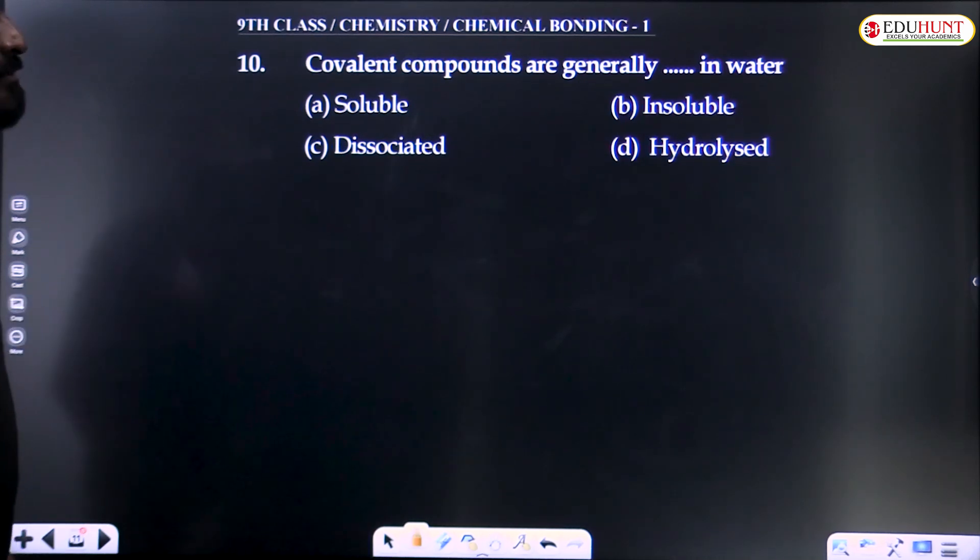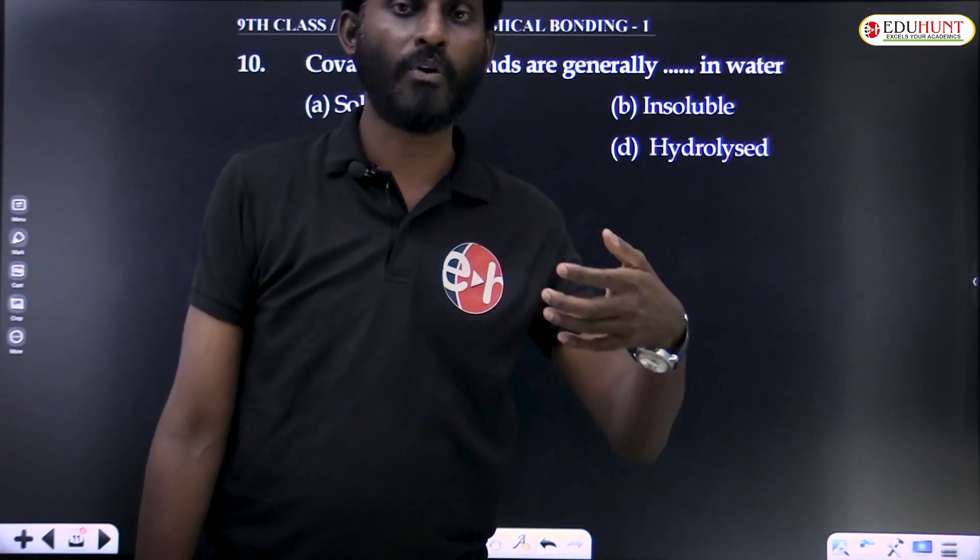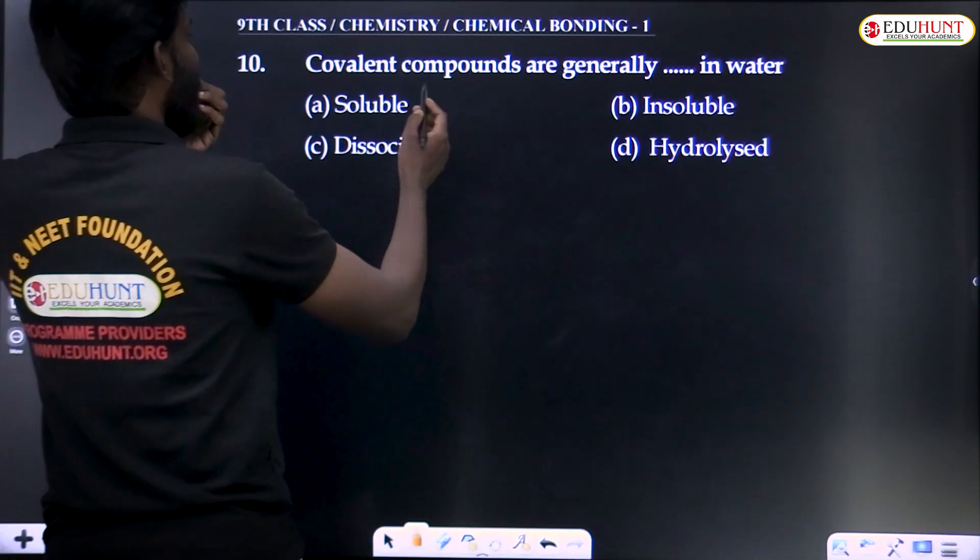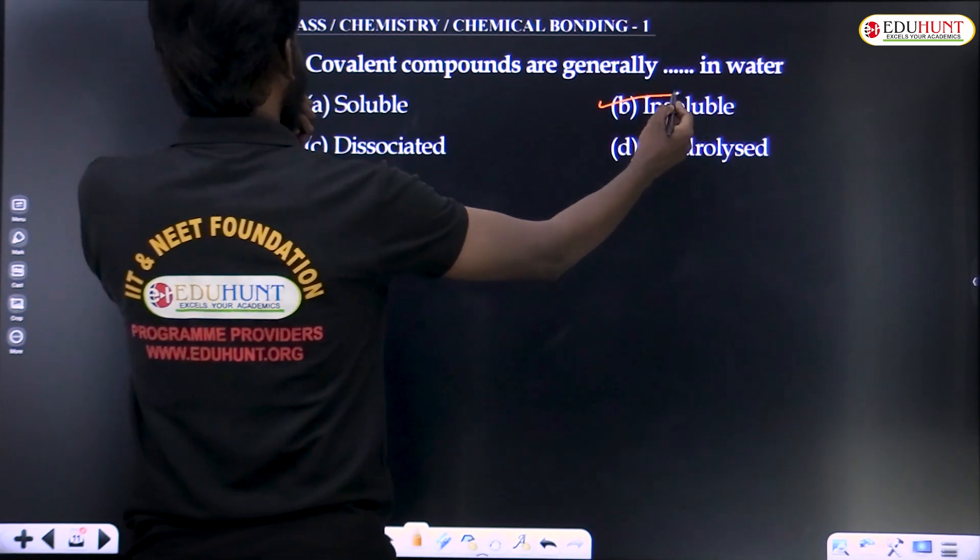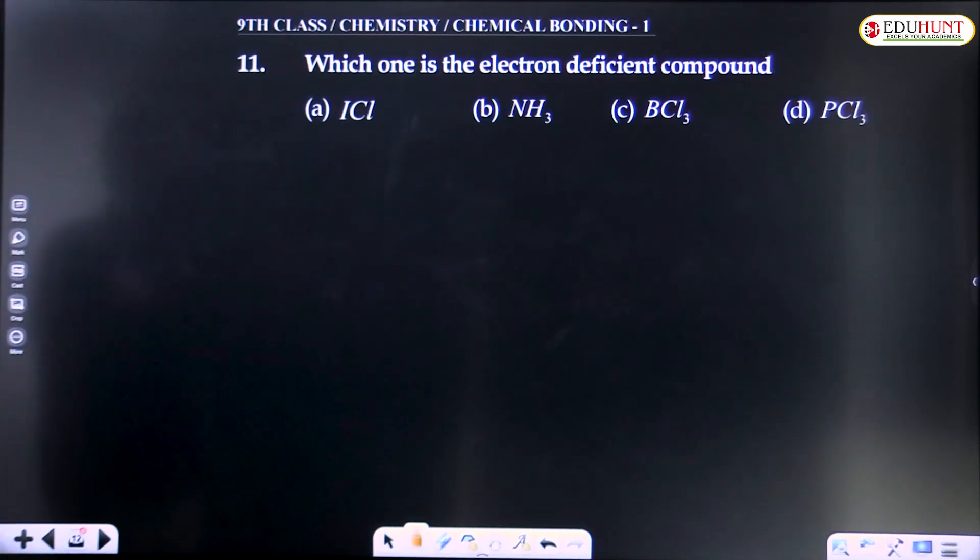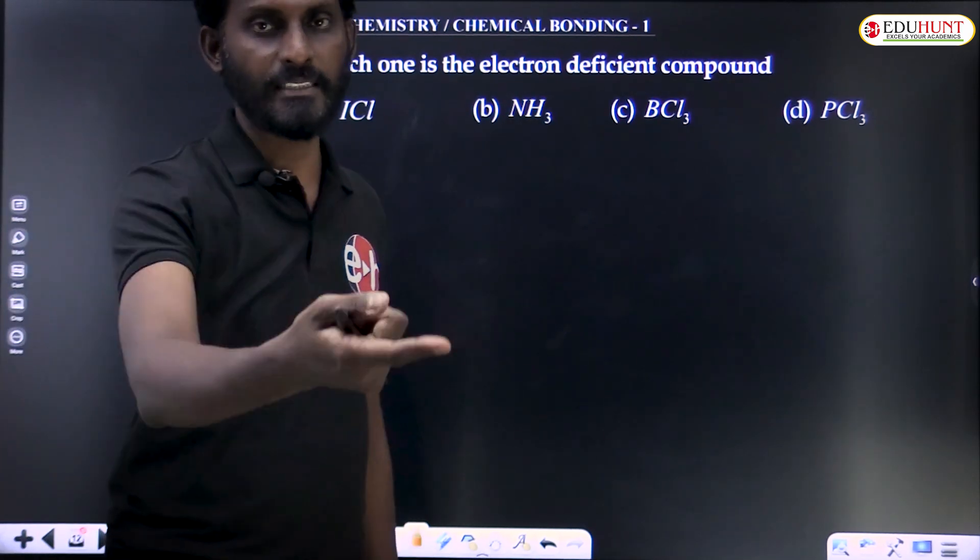Covalent bonds are generally - ionic bonds are generally more soluble in water. Covalent compounds are less soluble, generally insoluble. Covalent compounds generally dissolve in nonpolar solvents like benzene.